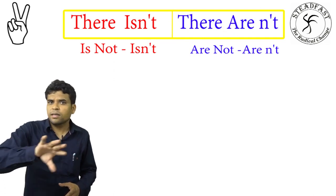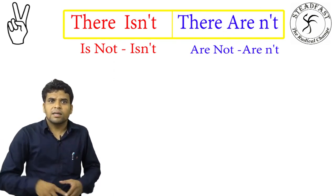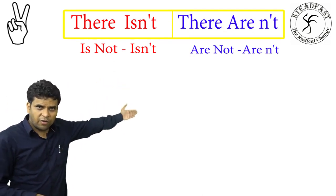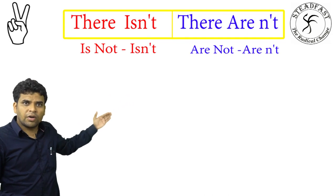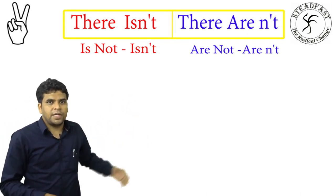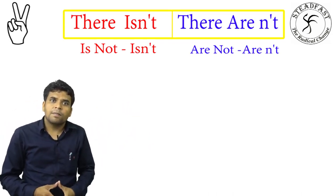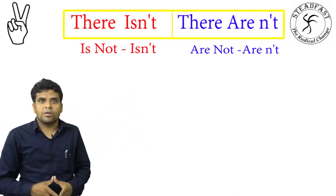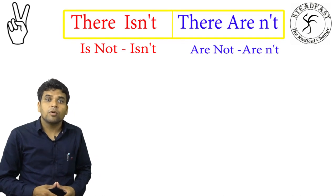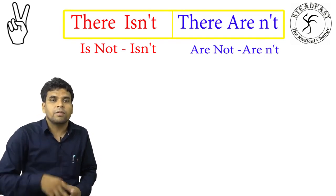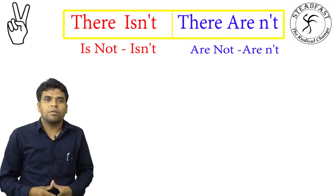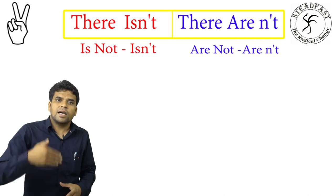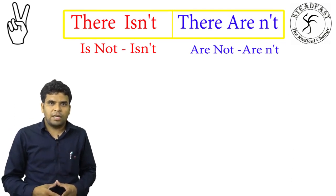Now let's say a sentence in the negative form. We use 'there isn't' and 'there aren't'. 'Isn't' is the short form of 'is not', and 'aren't' is the short form of 'are not'. Using short forms improves our pronunciation skills.